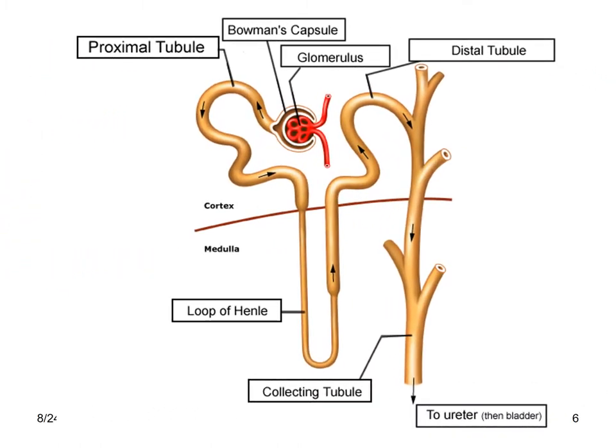This is a typical nephron. You can see the Bowman's capsule and the glomerulus, followed by the proximal convoluted tubule. It is convoluted and enters from the cortex towards the medulla, becoming the descending limb of the loop of Henle, then the ascending limb of the loop of Henle, followed by the distal convoluted tubule, and then leading into the collecting duct.